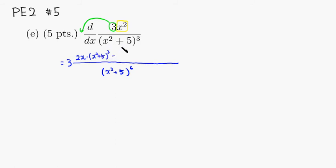Minus the top is x squared, times the derivative of the denominator, which is going to be 3 in front, x squared plus 5, subtract 1 from the power, so it's 2.